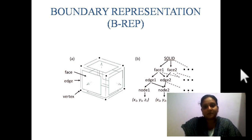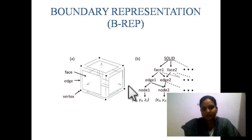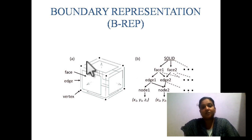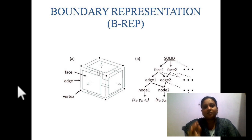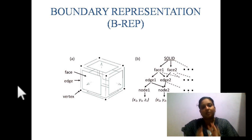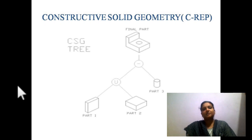Boundary representation, also called B-rep, uses both geometry and topology to represent a component. In the figure, you can see nodes — Node 1, Node 2, and so on. Because of these nodes, you get the length, width, and height, giving you the geometry. At the same time, you have faces, edges, and vertices that are connected, giving you the topology. Boundary representation joins surfaces — makes a boundary — using geometry and topology in order to get a solid model.